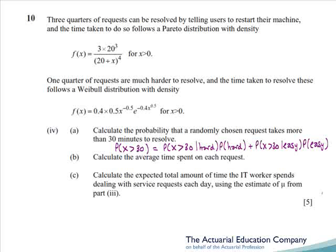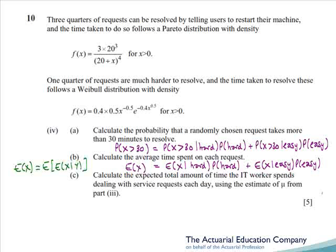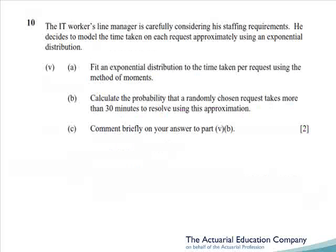Part B, we have to calculate the average time, and we'll just use a similar approach. We'll work out the average if it's a hard question, times the probability it's hard, plus the average if it's an easy question, times the probability it's easy. Essentially, we're using our conditional formula, E of X is equal to the expectation of E of X given Y. For Part C, to get the expected total time, we simply take our answer to Part B, which is the average time of each request, and then multiply it by the average number of requests.